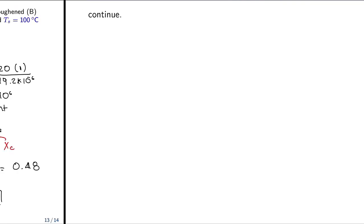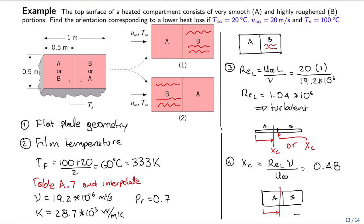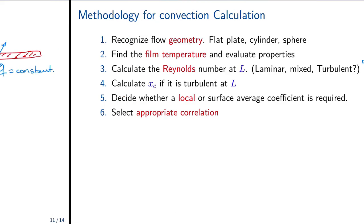Next step, so we were in fourth. Fifth step is to compute the Nusselt number. To highlight, that means we have a mixed condition. Now with those mixed conditions we need to compute Nusselt average.